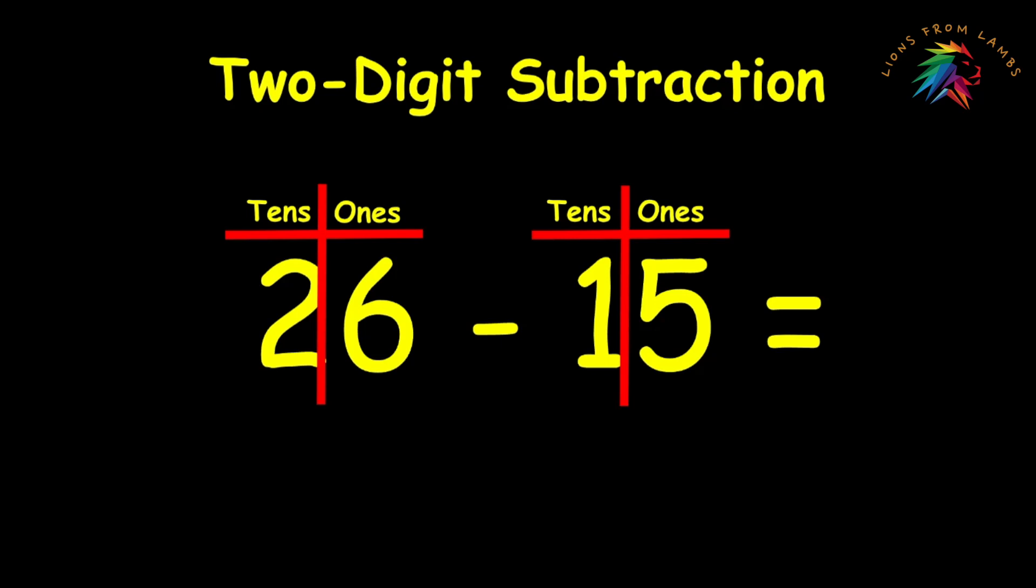Six has a value of 6. Five has a value of 5. But two has a value of 20 because it's in the tens place. And the one in 15 has a value of 10. Again, because it's in the tens place.